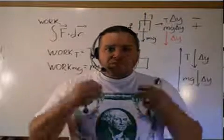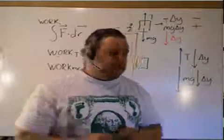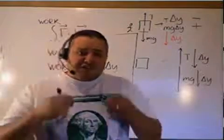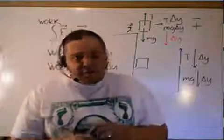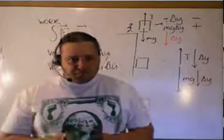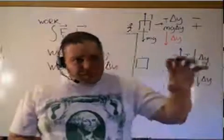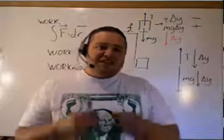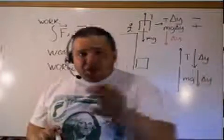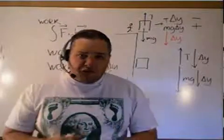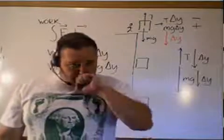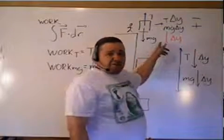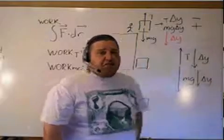Positive work is an attempt to speed the object up. Negative work is an attempt to slow the object down. Net positive work — meaning I totaled all my work together and got a positive number — means the object is speeding up. Net negative work — when I totaled all my work and got a negative number — means the object is slowing down.